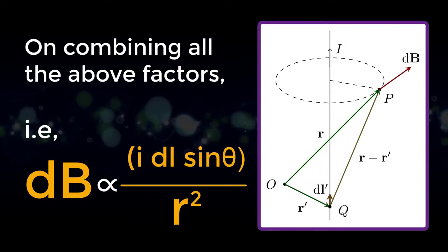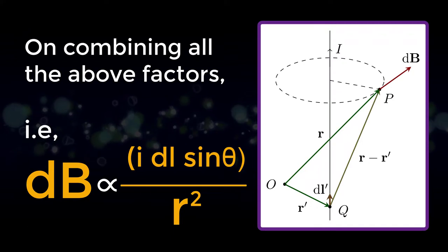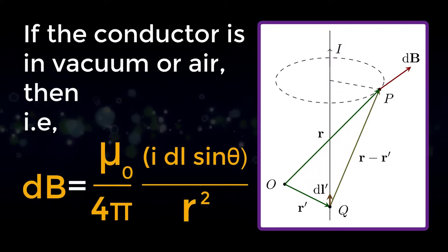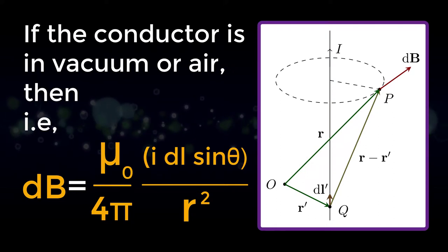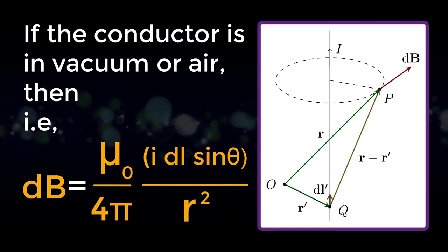On combining all the above factors, dB directly proportional to I dl sine theta by r square. If the conductor is in vacuum or air, then dB is equal to µ0 by 4π into I dl sine theta by r square.